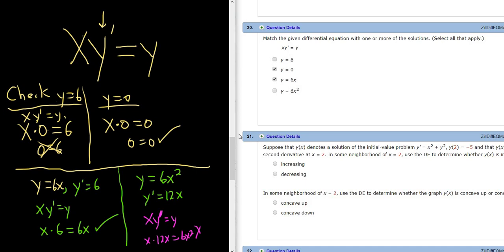So basically you just take each of these and plug it in. The only two ones that seem to work are y equals 0 and y equals 6x. I hope this video has been helpful.